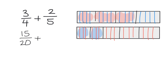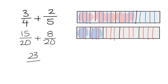And then the two-fifths down here is no longer just two-fifths. Counting the shaded pieces, it's eight out of twenty — eight-twentieths. And when we add those together we get twenty-three-twentieths, although I could also write that as one and three-twentieths.